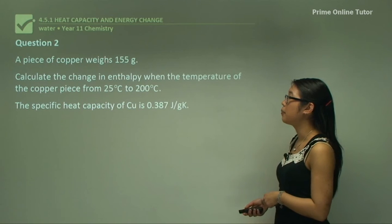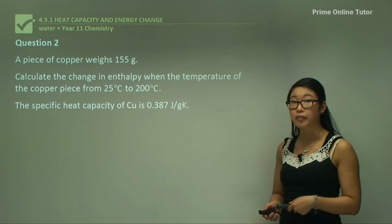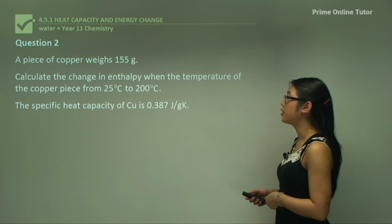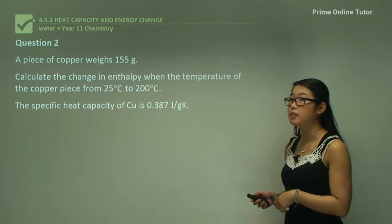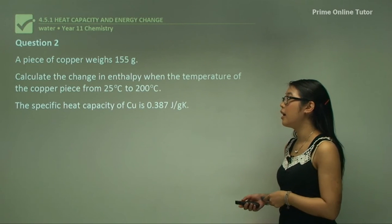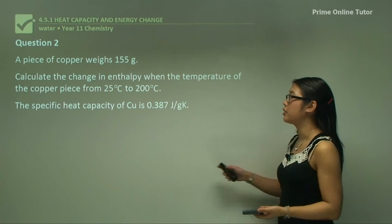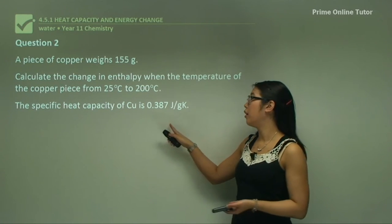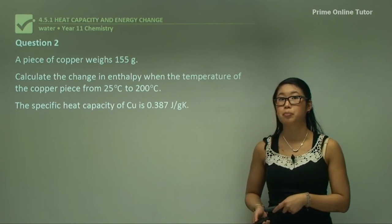Question two: a piece of copper weighs 155 grams. Calculate the change in enthalpy when the temperature of the copper piece changes from 25°C to 200°C. The specific heat capacity of Cu is 0.387 joules per gram per Kelvin.